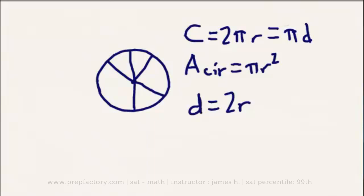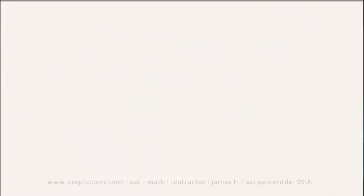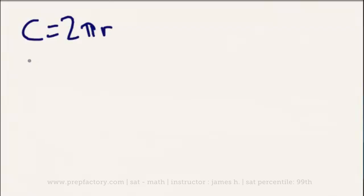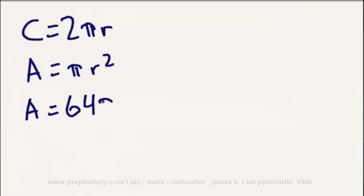Let's take a look at a quick practice problem. As you can see at the bottom of your screen, the question is: what is the circumference of a circle with an area of 64π? This doesn't involve even looking at a circle at all. We just need to remember our two equations: the circumference of a circle equals 2πr, whereas the area equals πr². We're given that our area equals 64π.